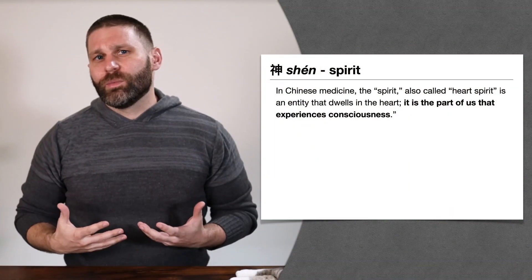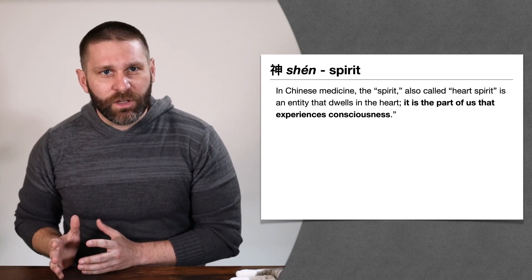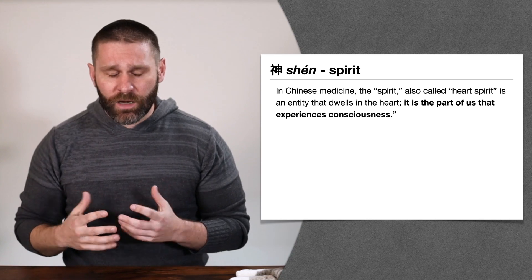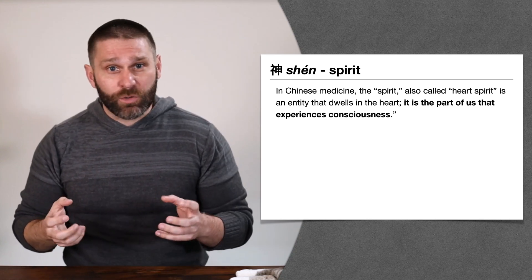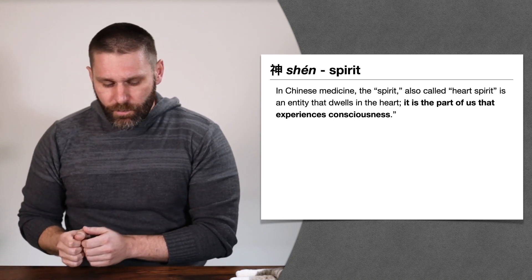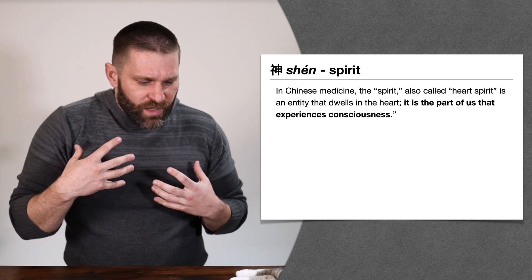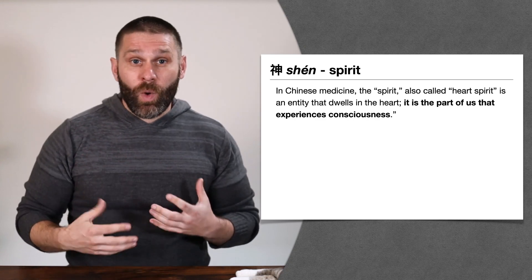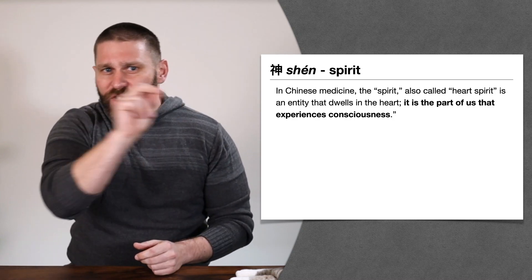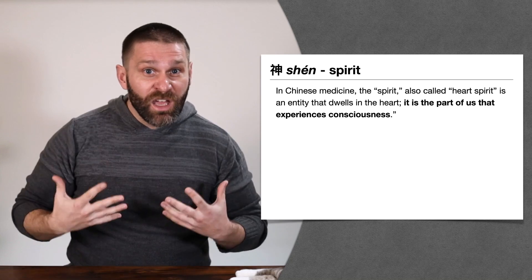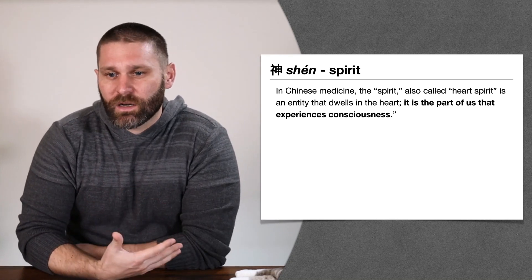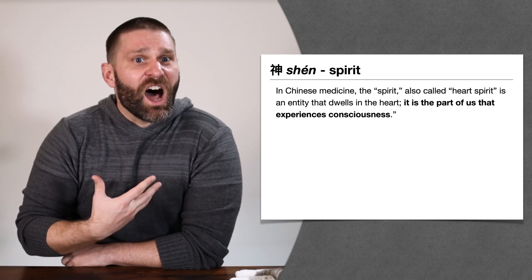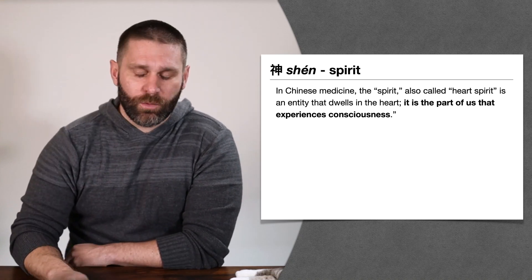A severe example of Shen disturbance is a person in a coma — still alive, still breathing, but with no interaction with their external environment. You can call their name, poke them, try to tickle them, but they have absolutely no response. A step below that is somebody delirious or in shock — awake, eyes moving, but if you try to get their attention they're just not there. That's a type of Shen disturbance: the part of us that can interact intelligently with our external environment is disrupted.